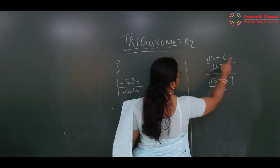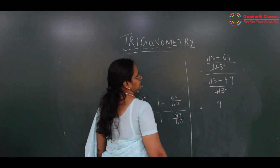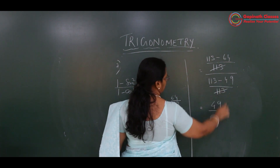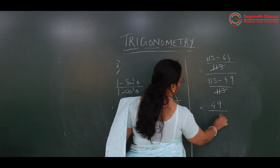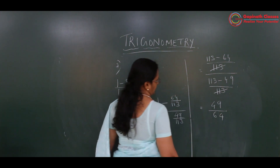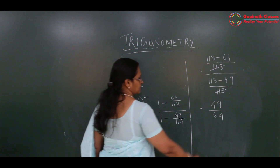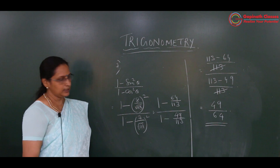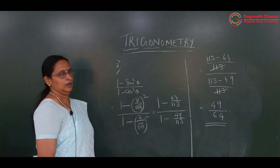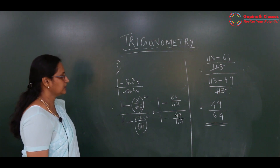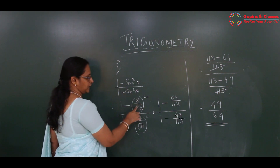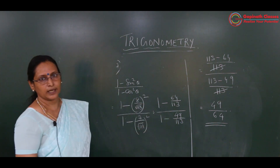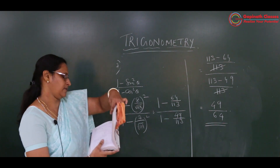So 113 minus 64 is 49, and 113 minus 49 is 64. The answer comes to 49 upon 64. So cot theta is provided, and we find 1 minus sin square theta upon 1 minus cos square theta. Just do the arithmetic work and you will get the answer. This is the 7th question.